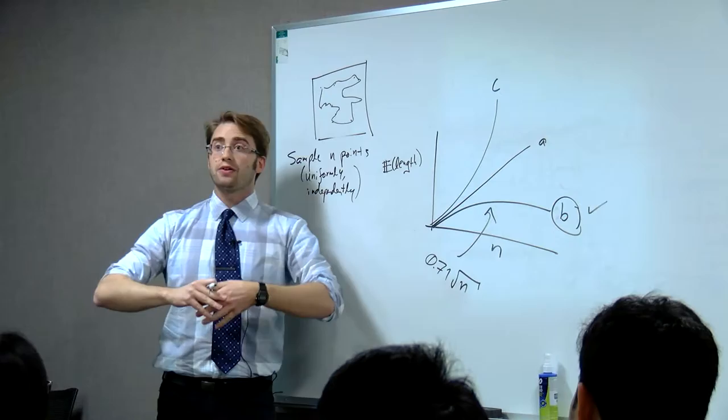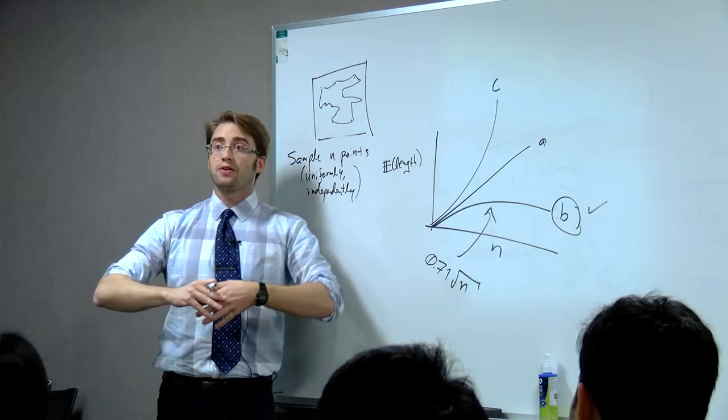So that means that if my number of points increases by a factor of four, the shortest path through all of them only increases by a factor of two.